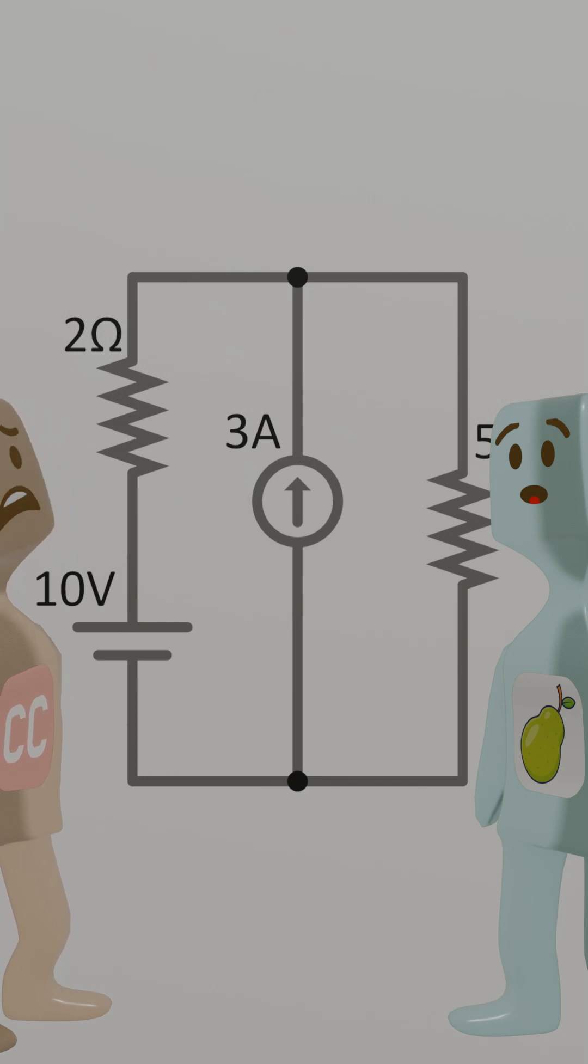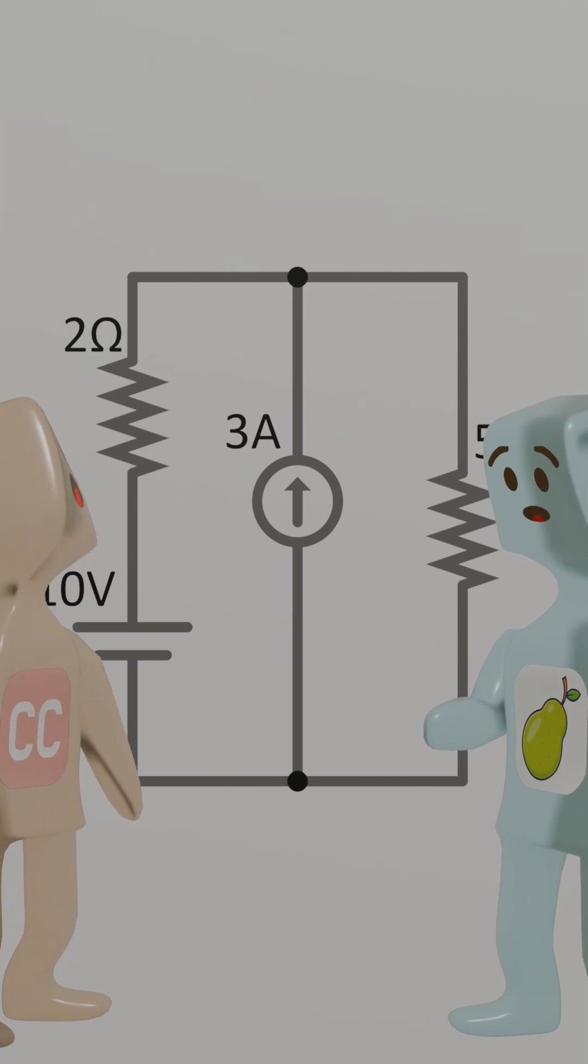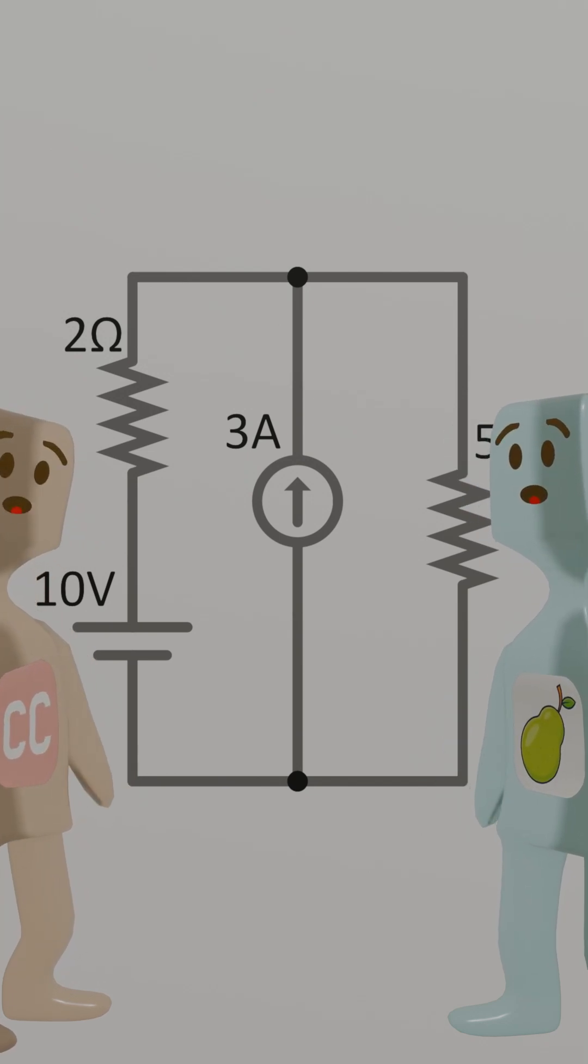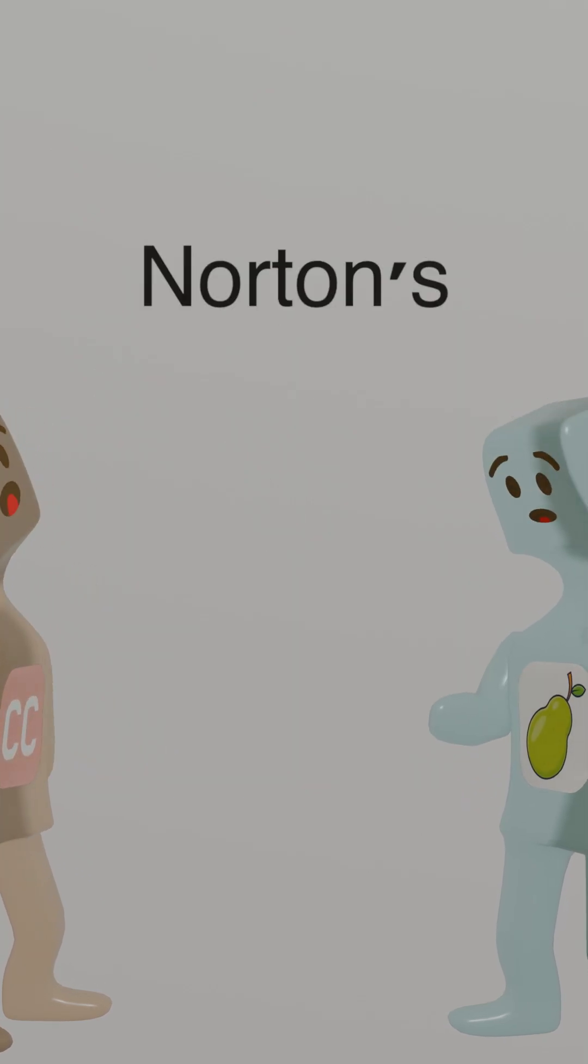Current sources, resistors, all parallel. You're just using the wrong tool. Master Thevenin has a fellow apprentice named Norton. Don't trick me. Norton? You mean the antivirus software? This Master Norton is a wizard at Circuit Simplification. Simplification again?